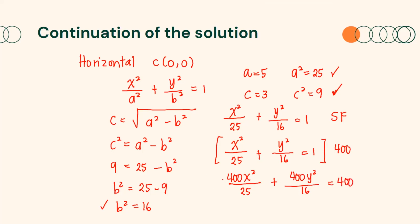Dividing 400 by 25 gives 16, so we have 16x² plus 25y² (since 400 divided by 16 is 25). Then, writing the constant term to the left side of the equation, minus 400 equals 0. So this is the equation in general form: 16x² plus 25y² minus 400 equals 0.